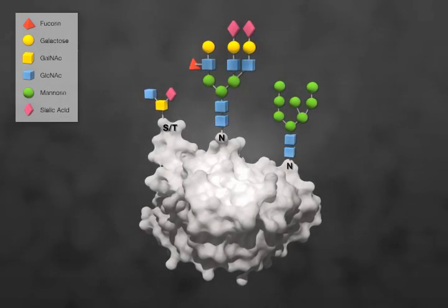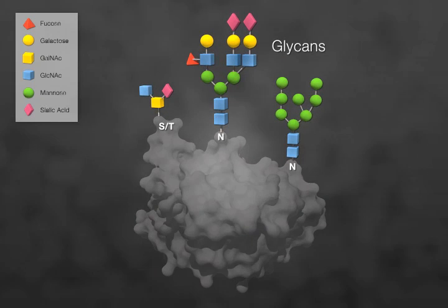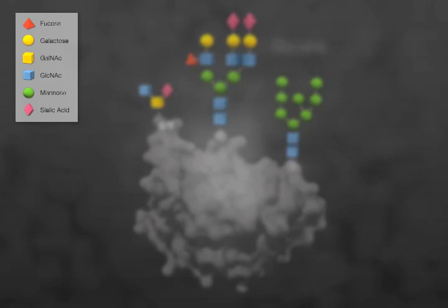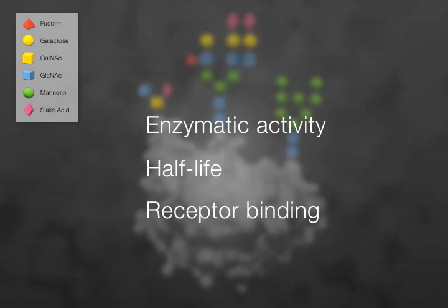Secretory and membrane proteins are often post-translationally modified with sugar chains called glycans. Glycans are essential for the stability and function of the mature protein. They affect enzymatic activity, half-life, and receptor binding, among other biological processes.